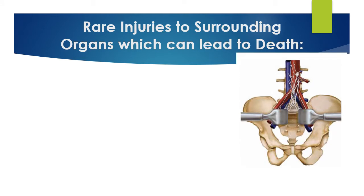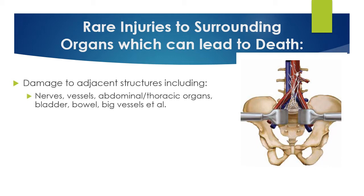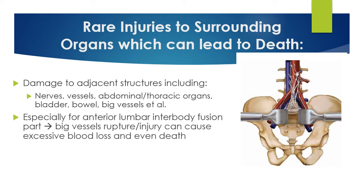Rare injuries to surrounding organs can occur during lumbar spine surgery. Damage to adjacent structures includes, but is not limited to, nerves, vessels, organs in the abdomen and thoracic area, the bladder, bowel, and major vessels. Especially during an anterior lumbar interbody fusion, large vessels can rupture and lead to injury causing excessive blood loss and possibly even death.